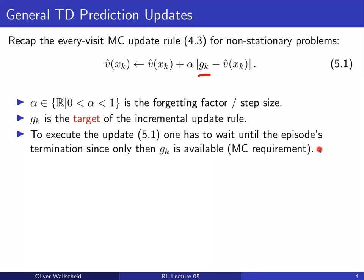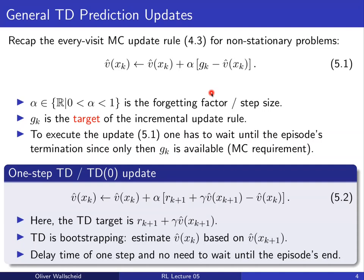In Monte Carlo, we have to wait until the episode has ended to get the return target. In contrast, temporal difference learning uses a slightly different target via bootstrapping. This is the one-step temporal difference, or TD(0), approach. The key difference is that while Monte Carlo uses the full sampled return, TD uses a bootstrapped target combining the instantaneous reward and the discounted value of the successor state.